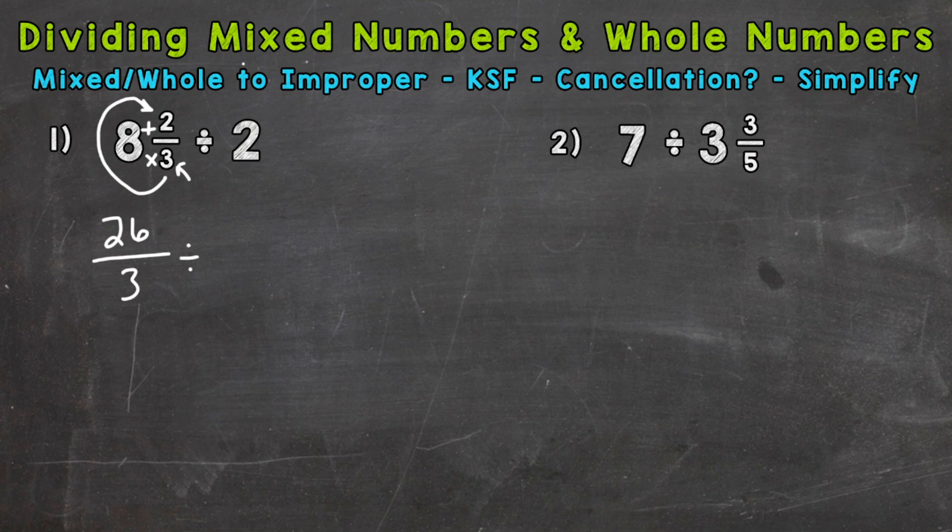Now for any whole number, in order to put it in fractional form, all we need to do is put it over 1. It's as simple as that. So now we're ready for the next step, which is KSF: Keep, Switch, and Flip. Those are the steps of dividing fractions.